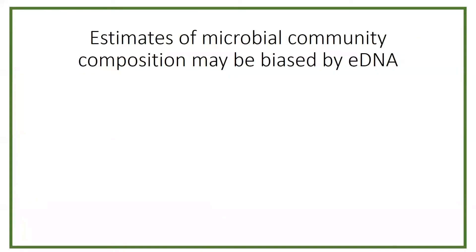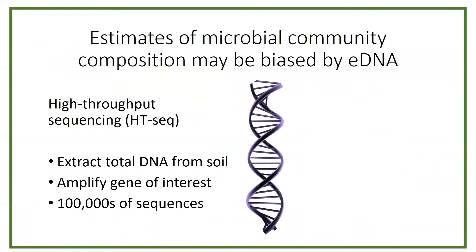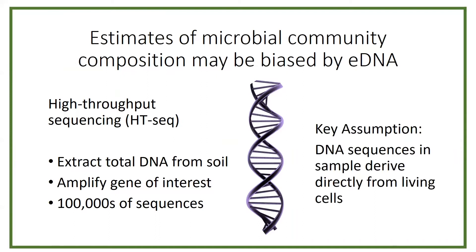For the purposes of this talk, we're really concerned about the potential that eDNA presents to introduce bias to our estimates of microbial community structure. This question has risen to the forefront in recent years due to the increasing accessibility of high-throughput sequencing. The basic workflow is that you take a sample, extract the total DNA — which will include both intracellular and extracellular DNA — amplify a gene of interest, and then directly sequence those amplicons.